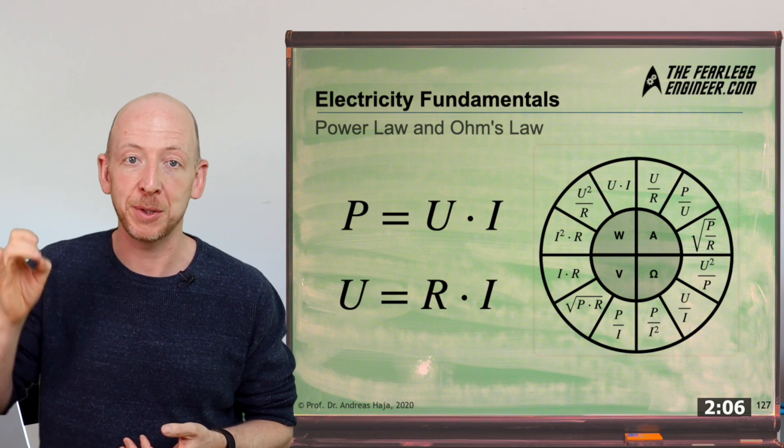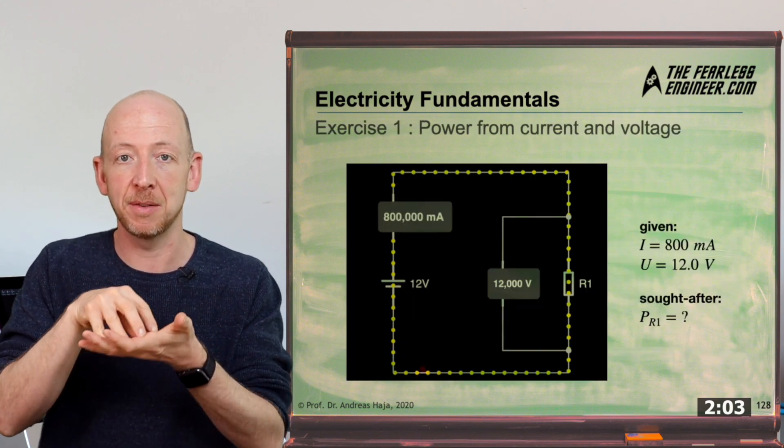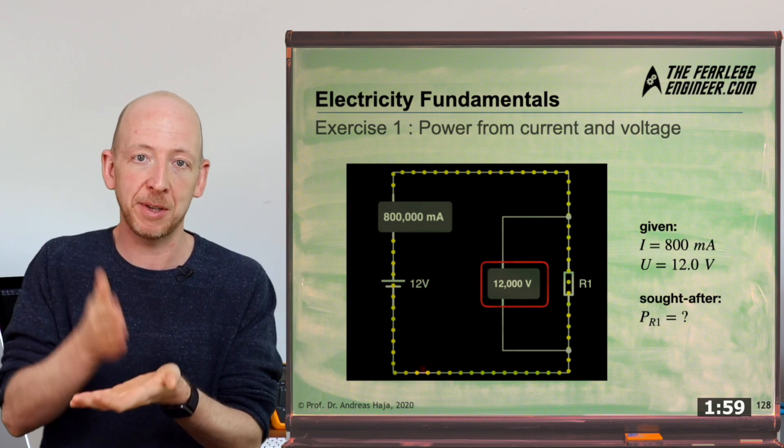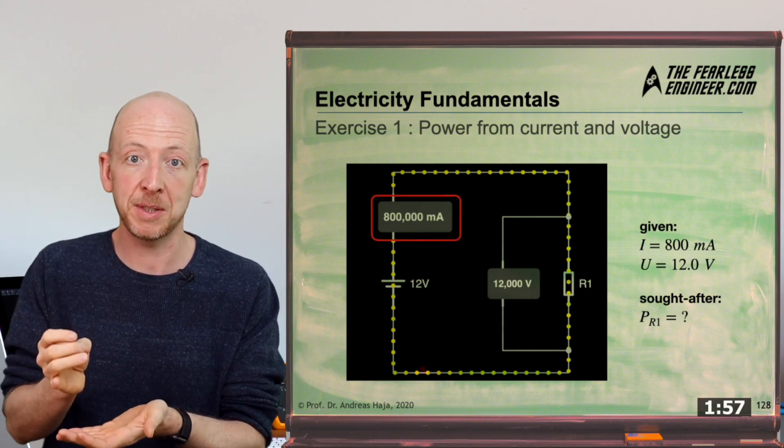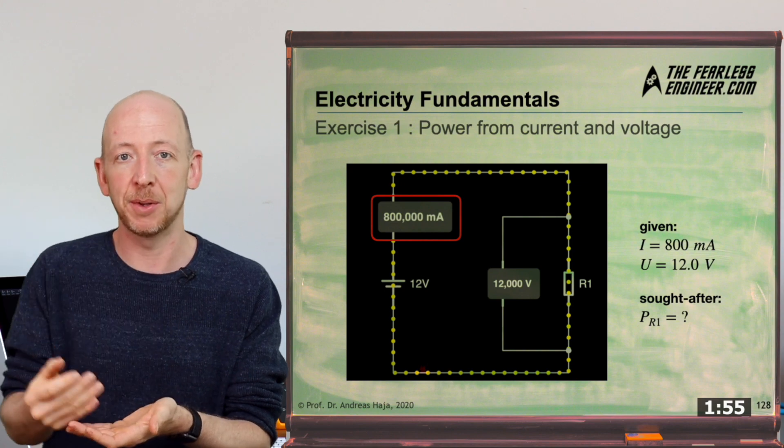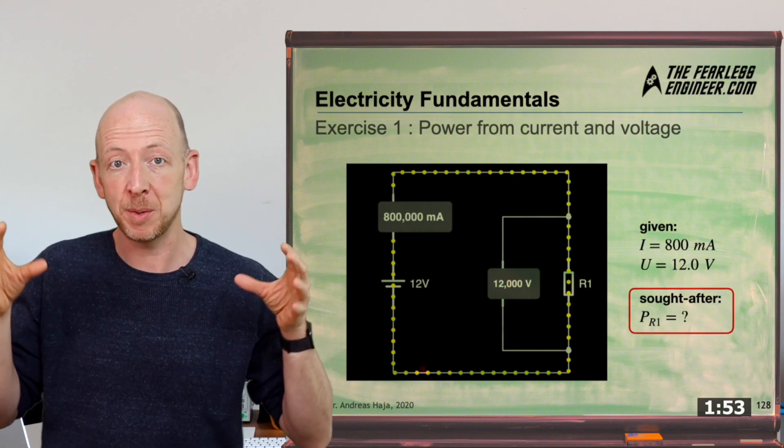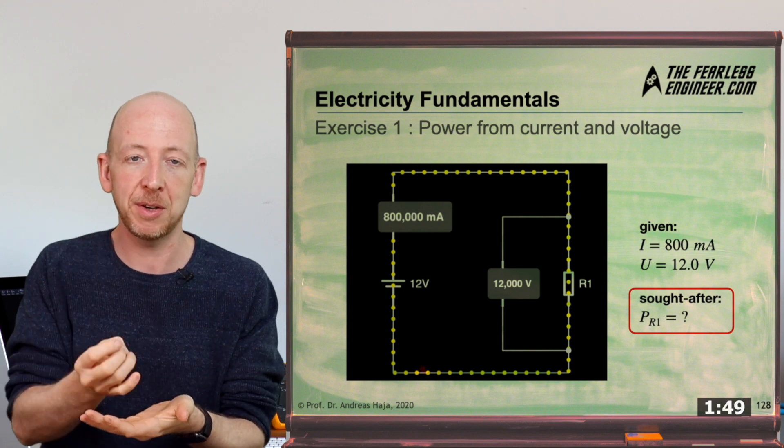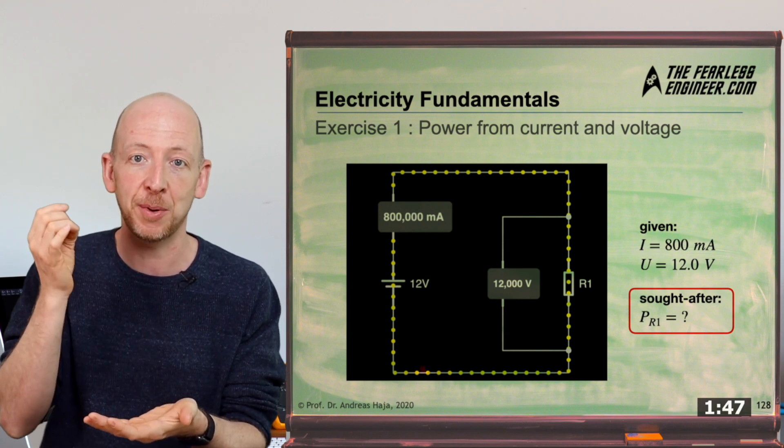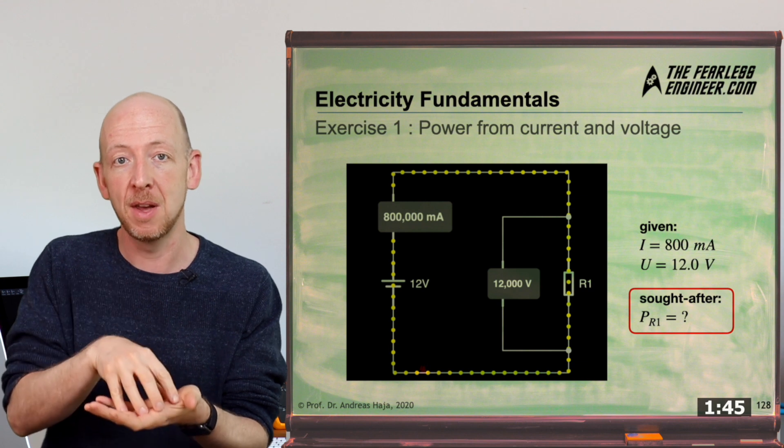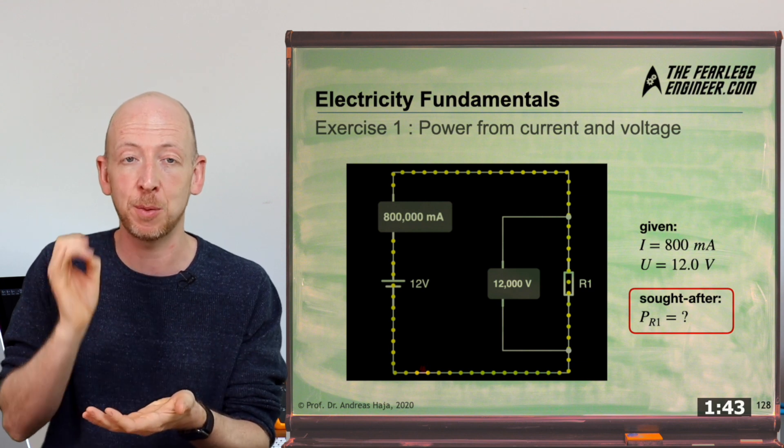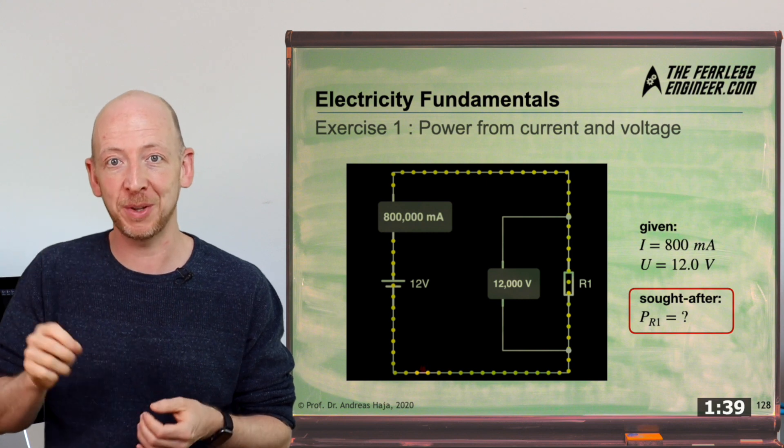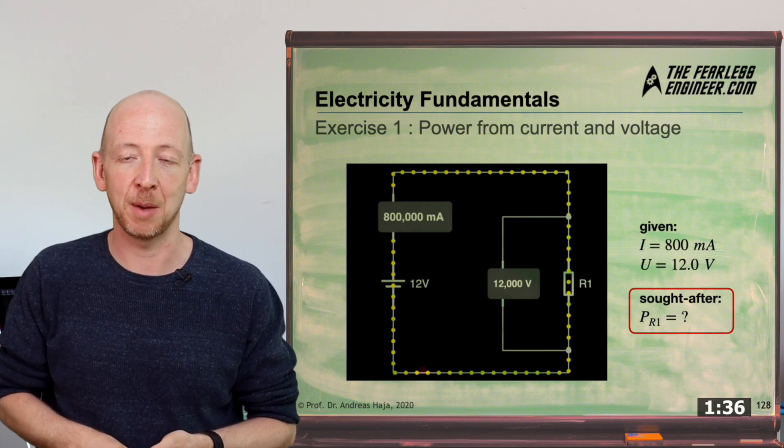Now let's have a look at the first task. Here you can see a resistor that is powered by a voltage source. The circuit has a voltage meter placed parallel to the resistor and a current meter directly behind the voltage source. The question is what amount of power is converted into heat at the resistor when the current meter indicates 0.8 amps and the voltmeter measures a voltage drop of 12 volts. It would be best to pause the video now and do the calculation yourself before watching the solution.